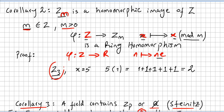For instance, imagine you are talking about Z3. If x equals 5, then φ(5) will be 5 times 1, which is 1+1+1+1+1, and in Z3 this is 2. Just check the proof for the theorem. So Zn is a homomorphic image of the integers — just take this mapping and it is a ring homomorphism.